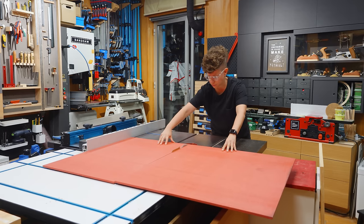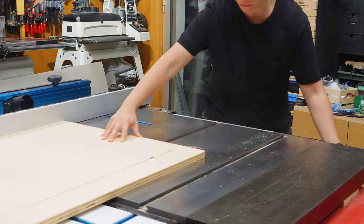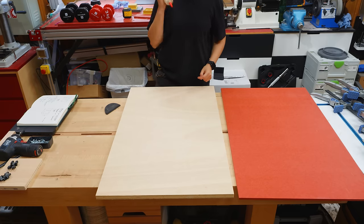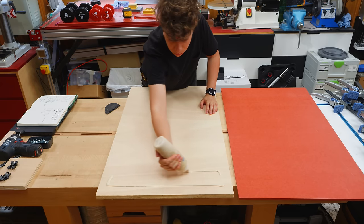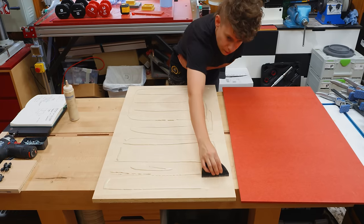To create the base, I used leftover material from old projects. I glued an 8mm piece of red Valkromat to this 18mm plywood board to make it more solid.